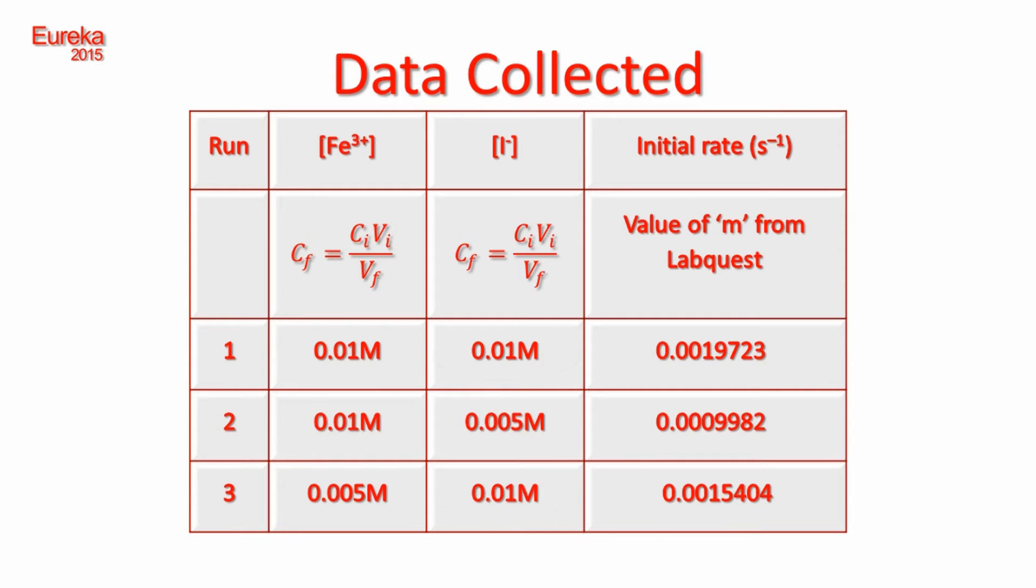If we compare trials 1 and 3, the concentrations of the iodide ions remains the same, but the concentrations of iron 3 plus ions in trial 3 is half that of trial 1.